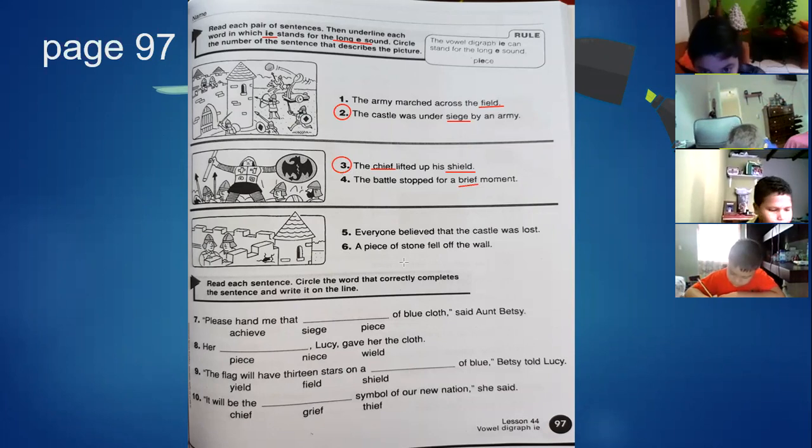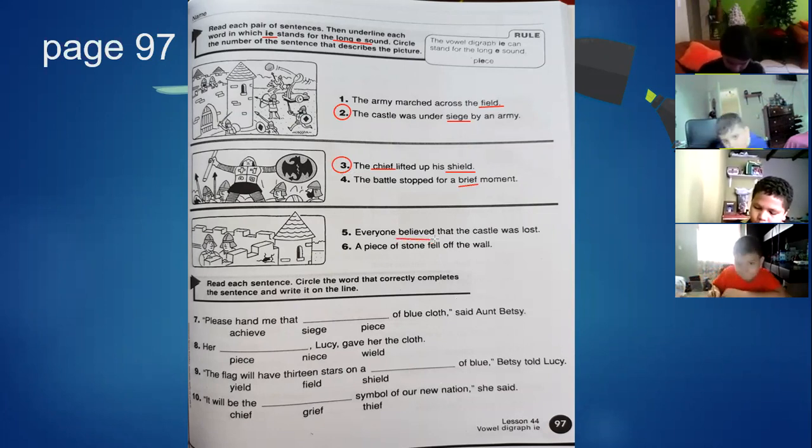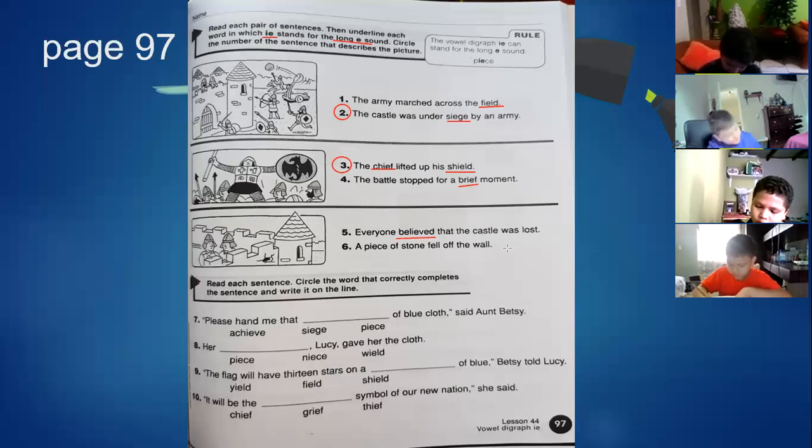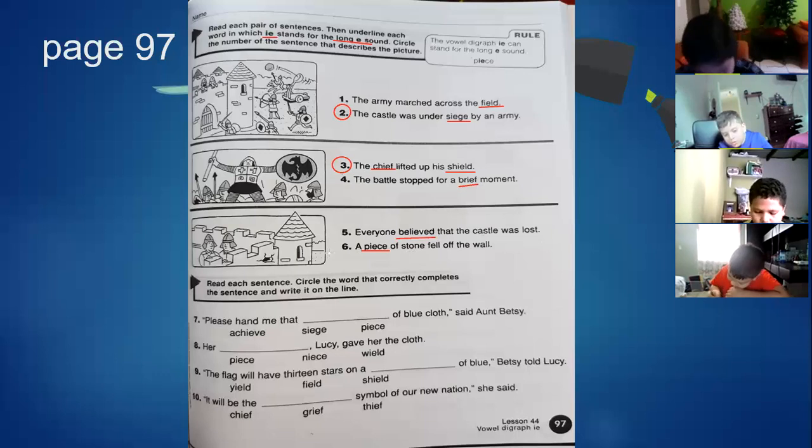The third exercise. Everyone believed that the castle was lost. Believe. Peace. A piece of stone fell off the wall. Piece. And that's piece. Which one do you think it is? The six. Because it's missing a piece of rock here, right?